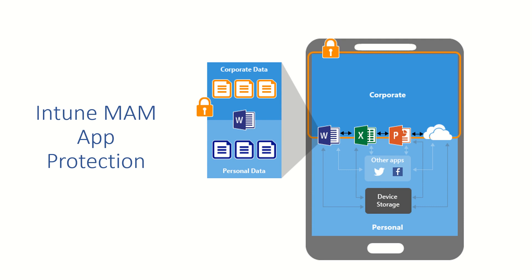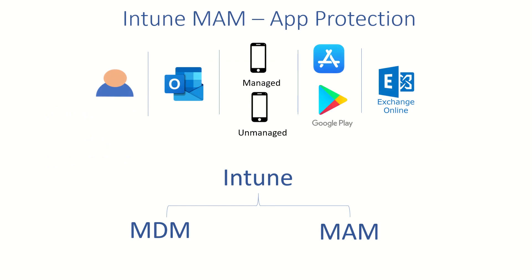This is exactly what Intune App Protection is all about. It's not only about the app — users can use any device, whether it's already enrolled in your MDM solution or a personal device. The best part is that all app protection policies you create and assign to users are independent from the device type, meaning MAM policies will be applied to all kinds of devices.